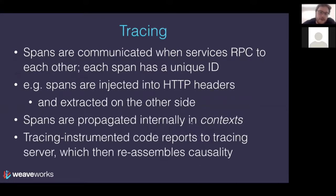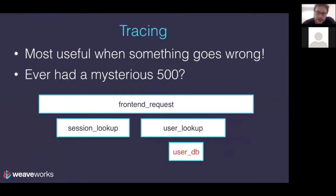Spans are internally propagated between the web server code and the web client code. If you have a microservice that both exposes an API server and makes API calls, it has a server and a client, and spans are propagated internally — probably using a context, at least in Golang. Code instrumented with tracing reports on an interval to a tracing server, which then reassembles the causality: what happened when, and what caused what to happen — producing a picture that looks like a trace view.